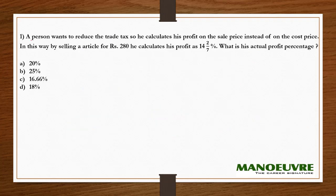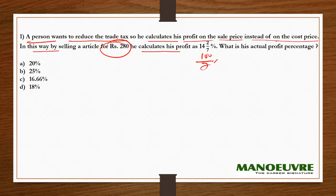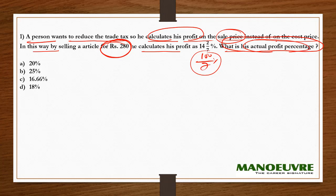Now let's hit the questions. The first question: a person wants to reduce trade tax, so he calculates his profit on the selling price instead of on the cost price. By selling an article for Rs. 280, he calculates his profit as 14 and 2/7 percent, which is 100/7 percent. What is his actual profit percent? The Rs. 280 value has no important role in this question.